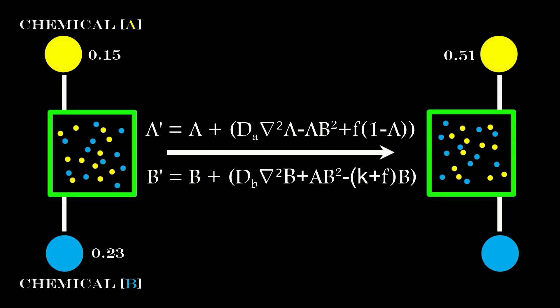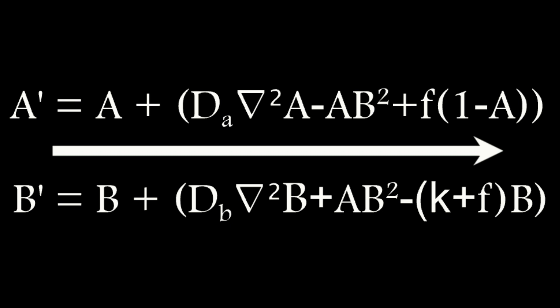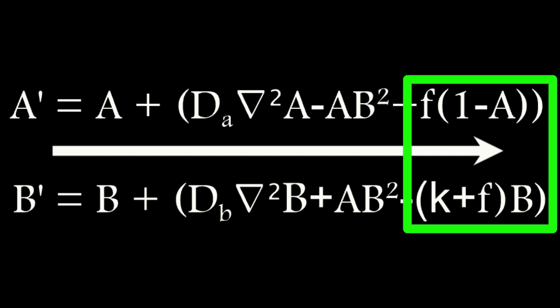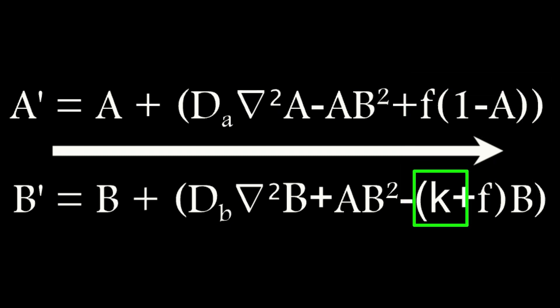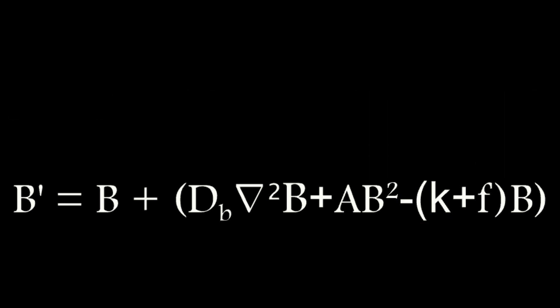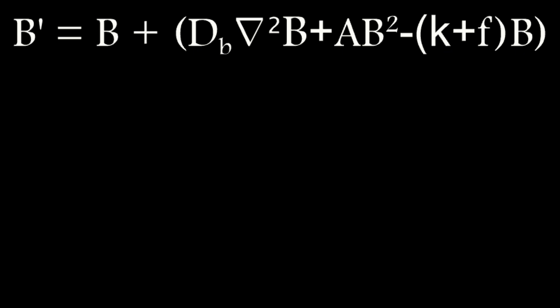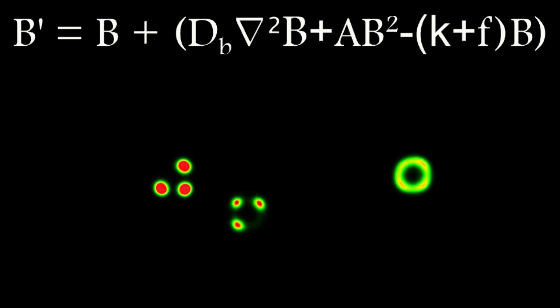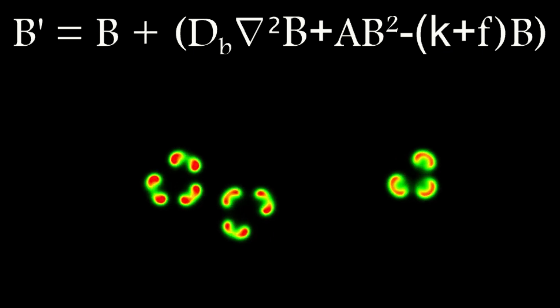When you add it all up, you get the value for A at that pixel point for the next frame. Comparing the two equations, the biggest difference is in the last term, where we have to introduce a kill rate. The third term in the B equation is the diminishment term, and without it the concentration of chemical B could increase without limit. In practice, B could be allowed to accumulate for a long time, but it naturally diffuses out of the system through the same or a similar process as that which introduces the new supply of chemical A.